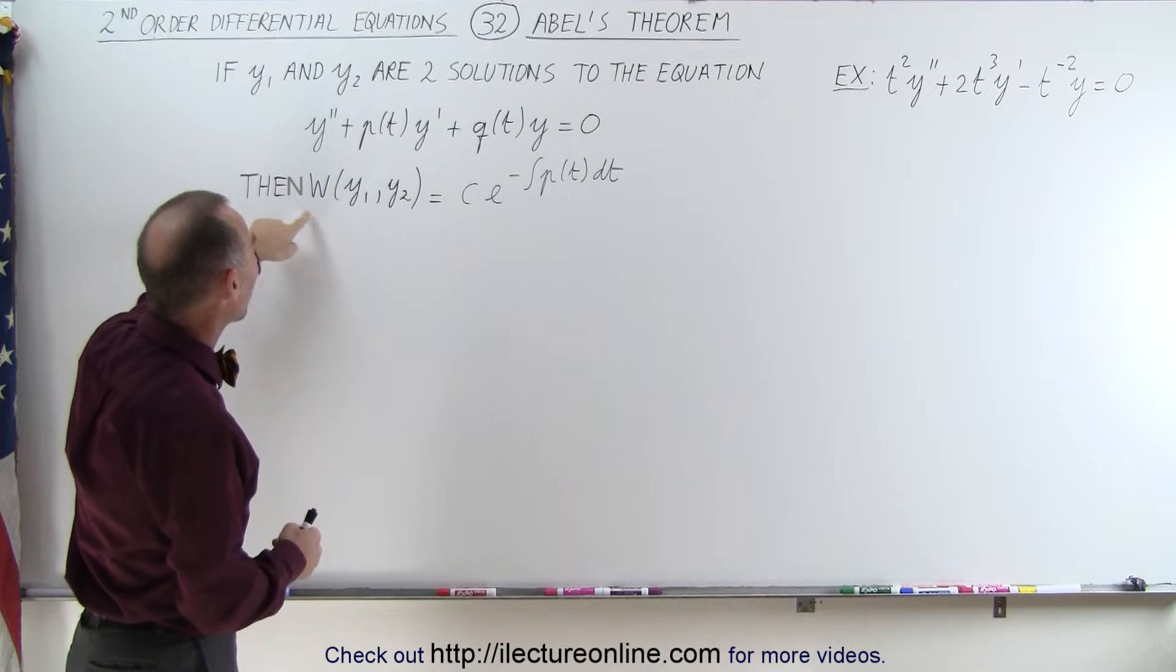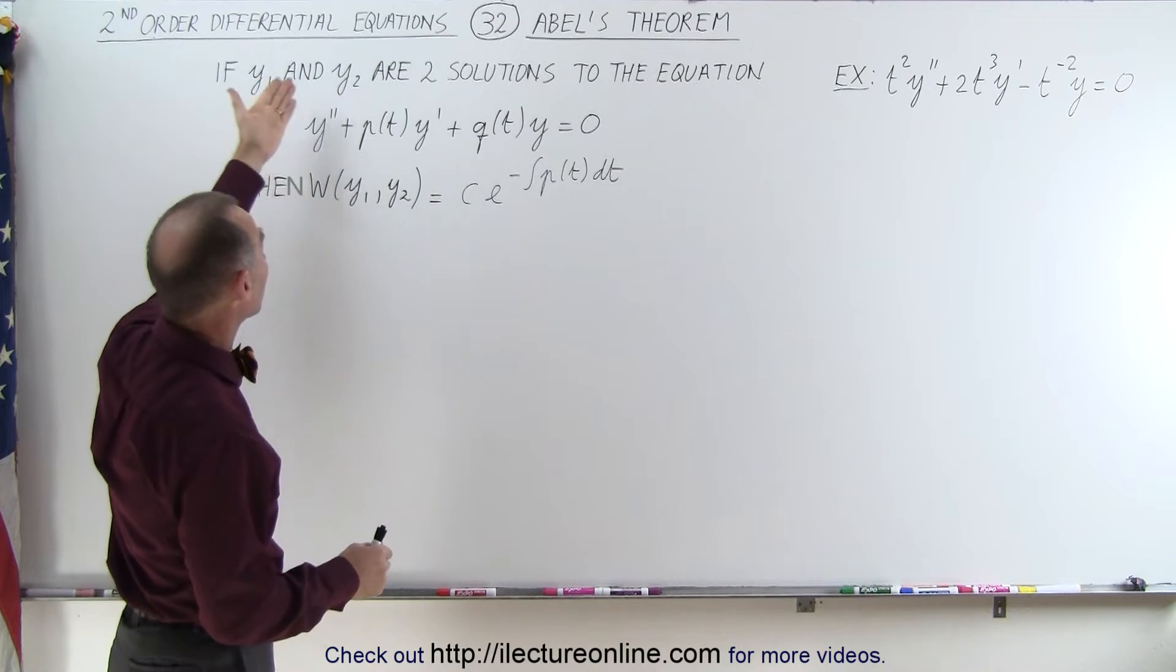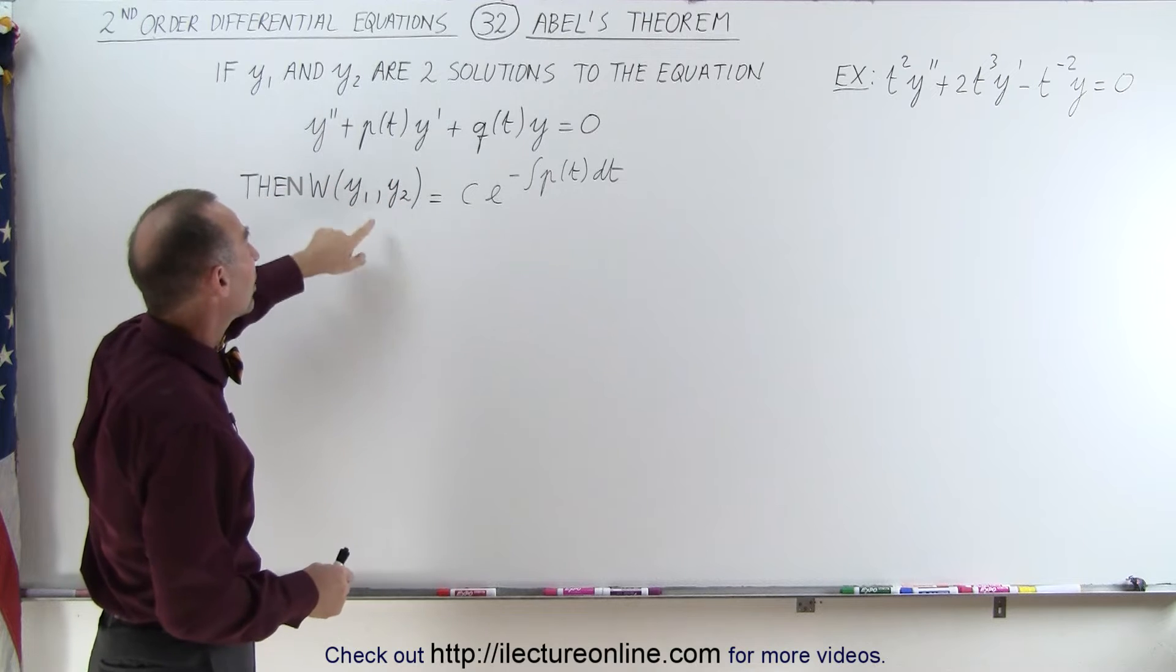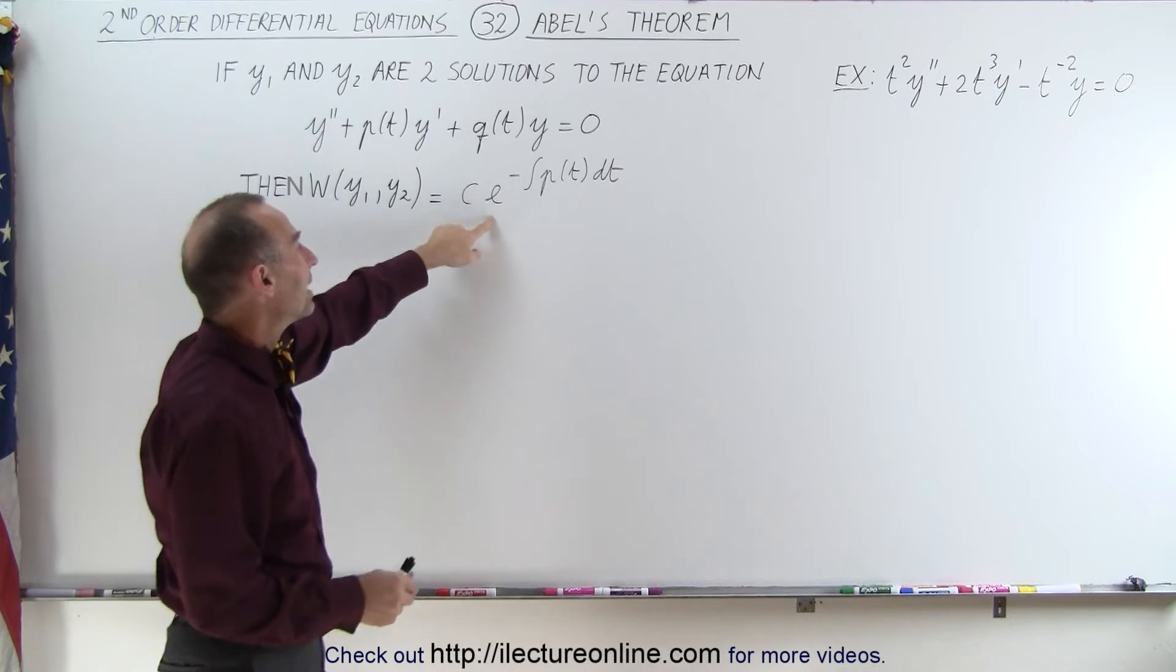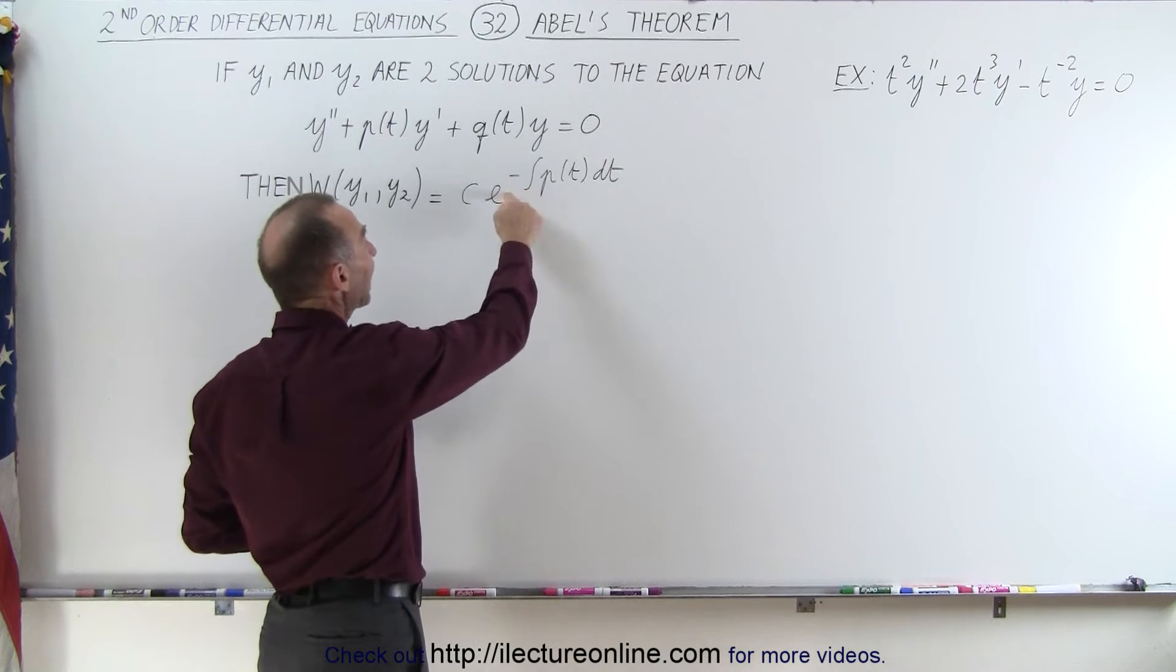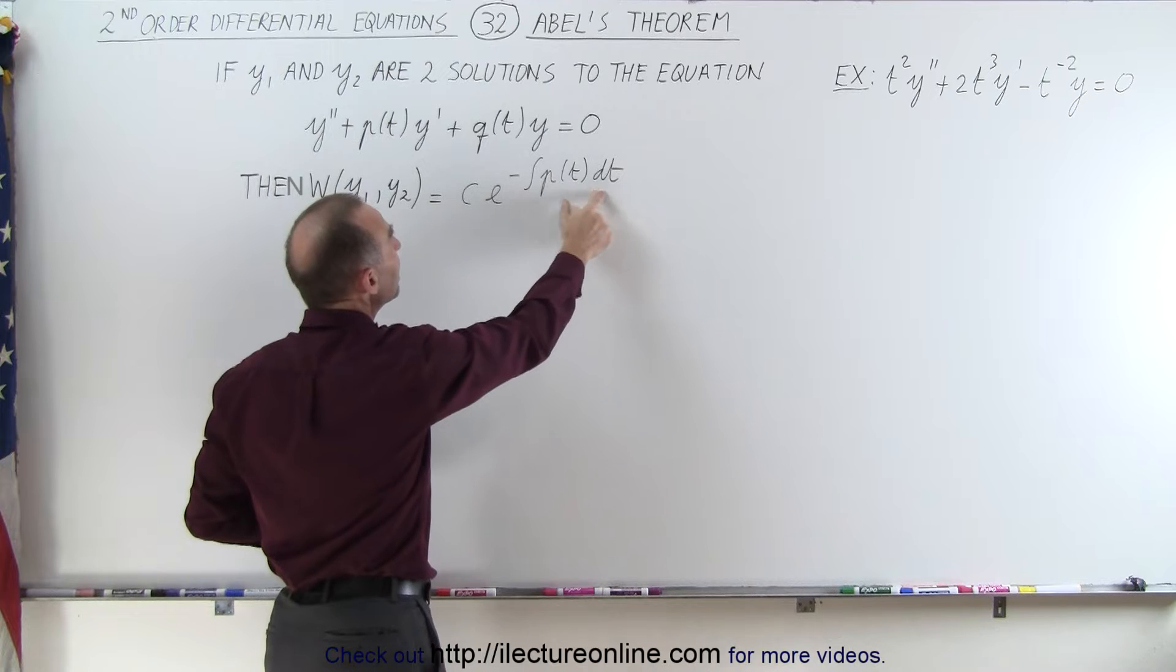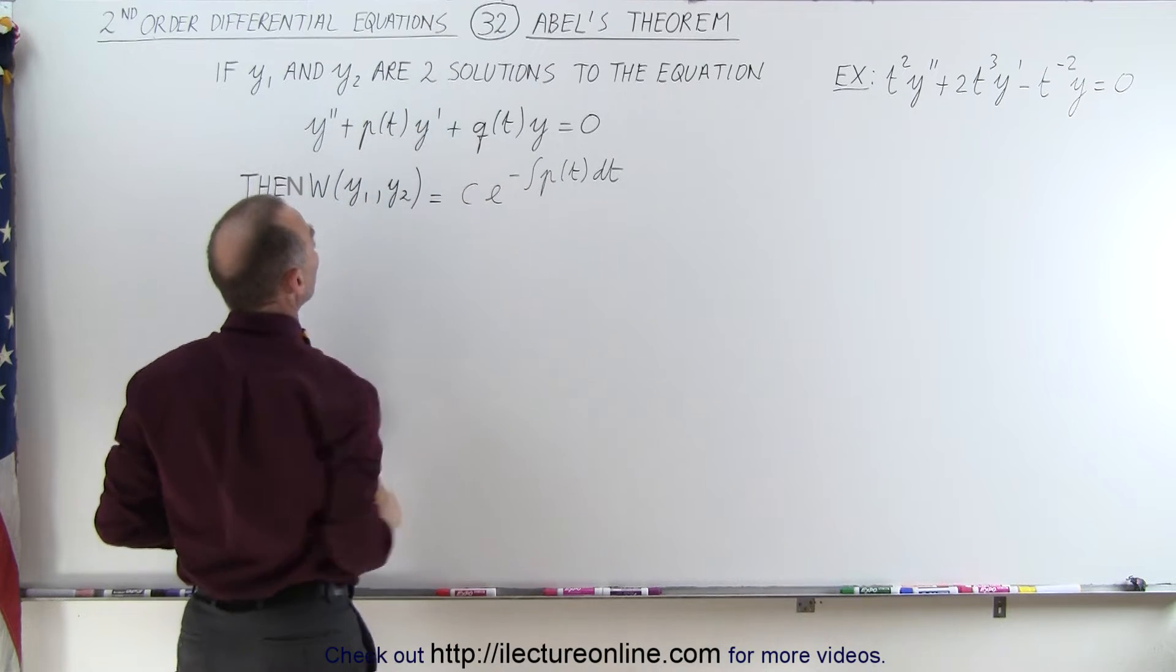then the Wronskian of the two solutions to that equation, and let's assume that y1 and y2 are the two solutions to the equation, then the Wronskian is equal to some constant times e to the minus, that's the exponent, to the exponent minus the integral of p of t dt, p of t being the function in front of the y prime term.